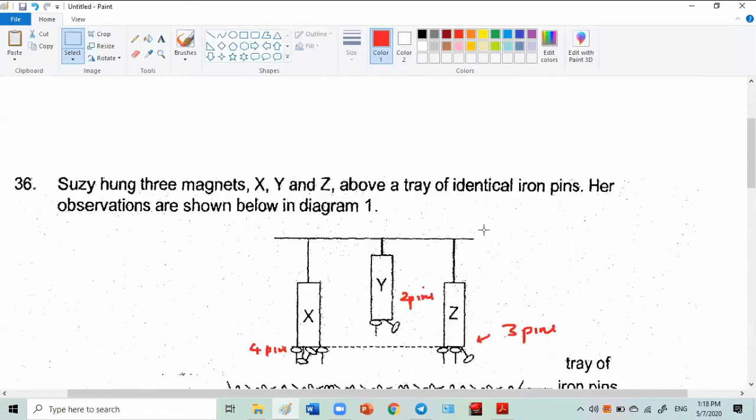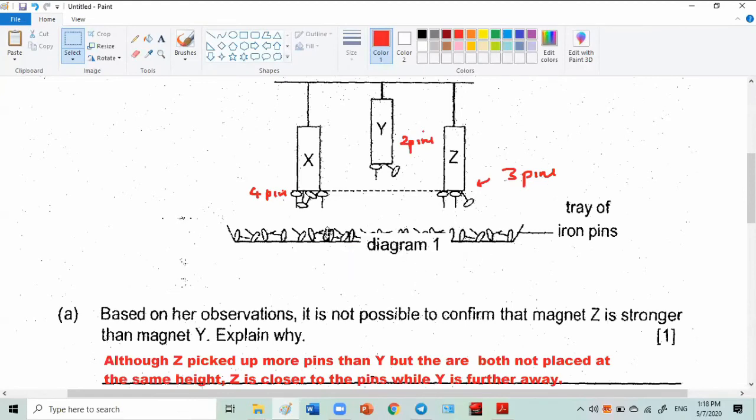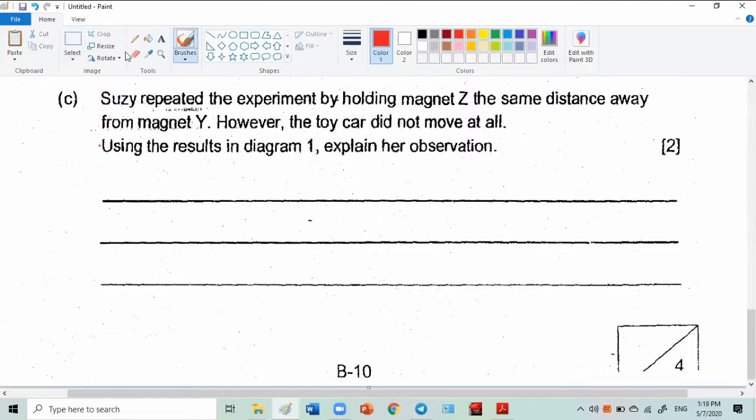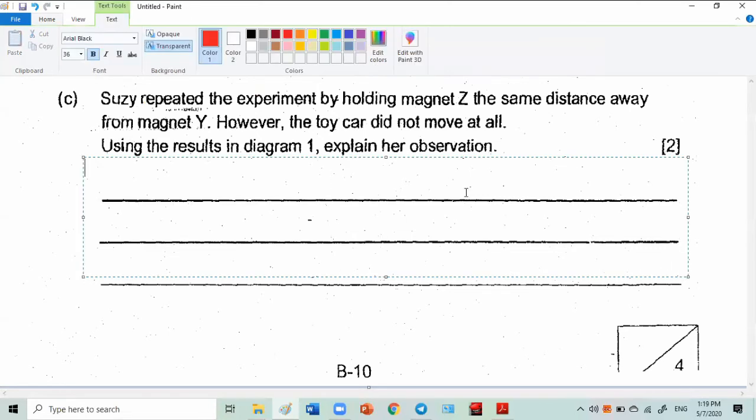You must use diagram one. Look at the diagram one here. Look at X, four pins. Look at Z, three pins. Same height. Can you now? Why you put X, they repel. Why you put Z, don't repel. Can you see already? Based on diagram one. From diagram one, we can see that both X and Z are hung from the same height.